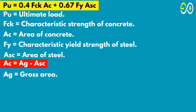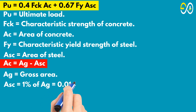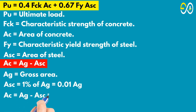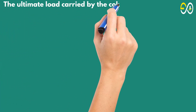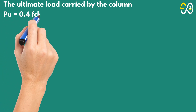Ac equals Ag minus Asc. Assuming Asc equals 0.01 Ag, then Ac equals 0.99 Ag, where Ag is the gross area. The ultimate load carried by the column: Pu equals 0.4 times fck times Ac plus 0.67 times fy times Asc.